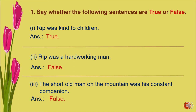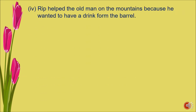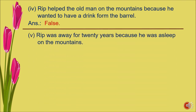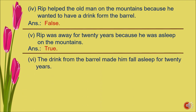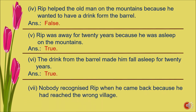The dog was Rip's constant companion, not the short old man. Number four — Rip helped the old man on the mountains because he wanted to have a drink from the barrel: false. Number five — Rip was away for twenty years because he was asleep on the mountains: true. Number six — the drink from the barrel made him fall asleep for twenty years: true.